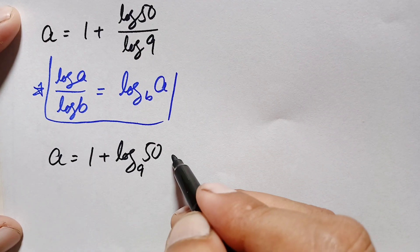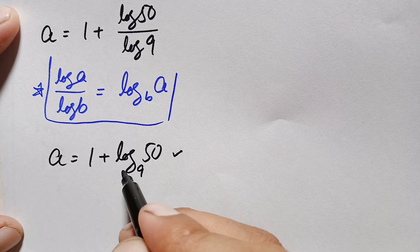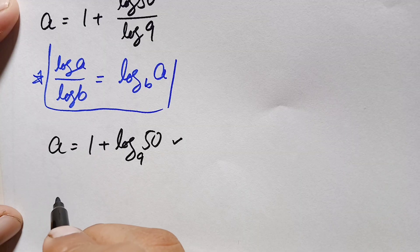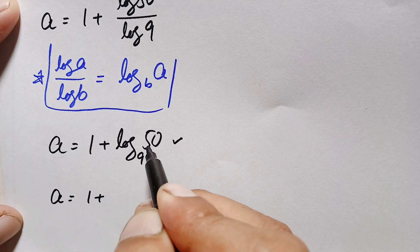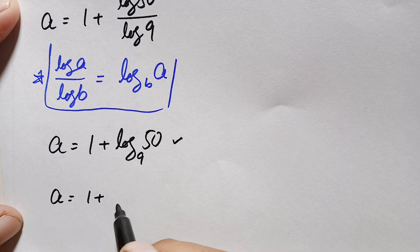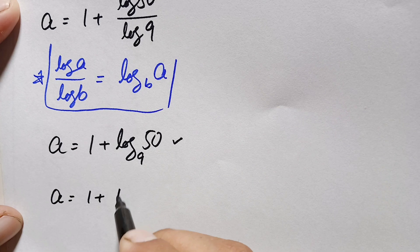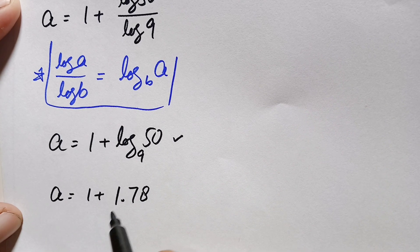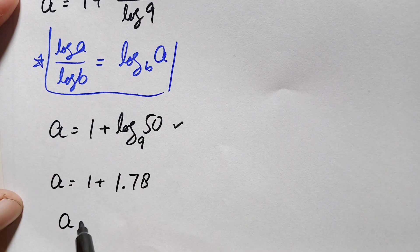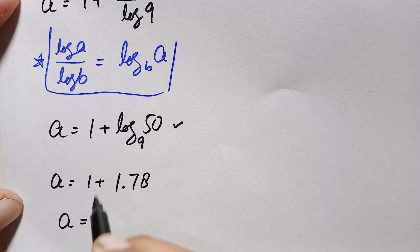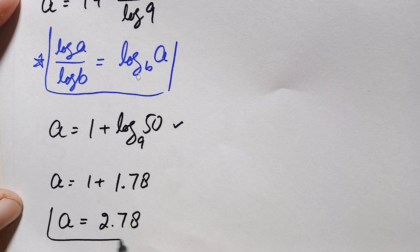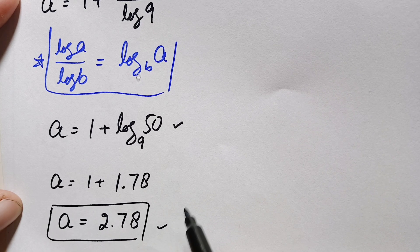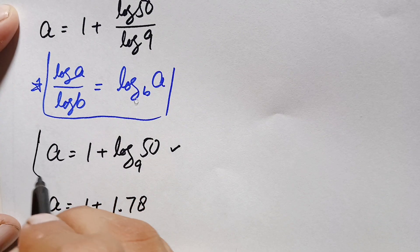To further simplify numerically, log(50) / log(9) is approximately 1.78. Adding 1, the final decimal value of a is approximately 2.78. So a = 1 + log_9(50) is the exact answer, and a ≈ 2.78 is the decimal approximation.